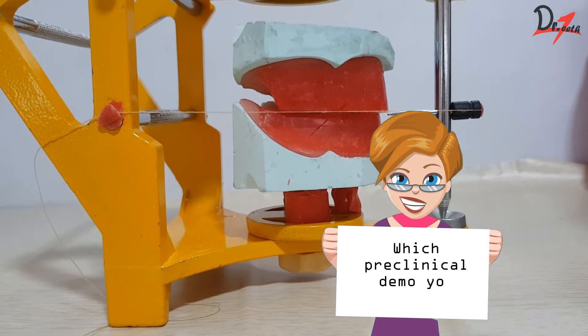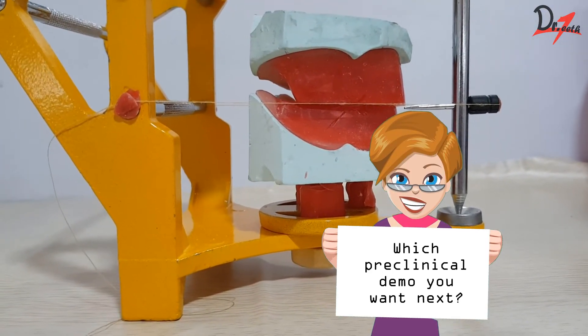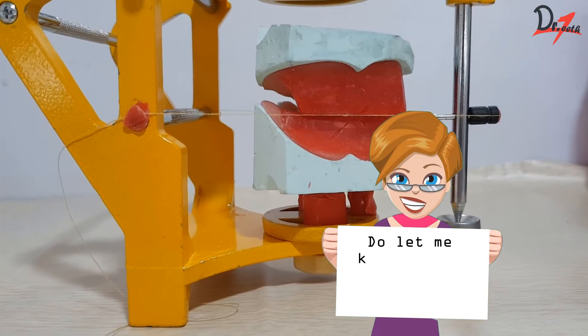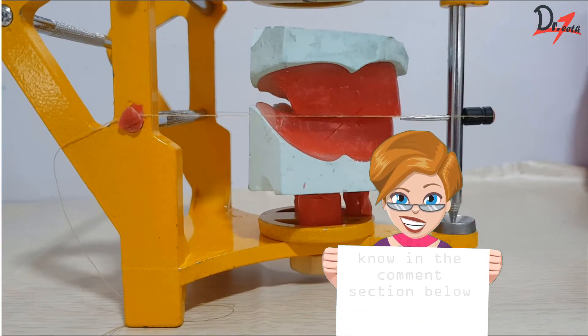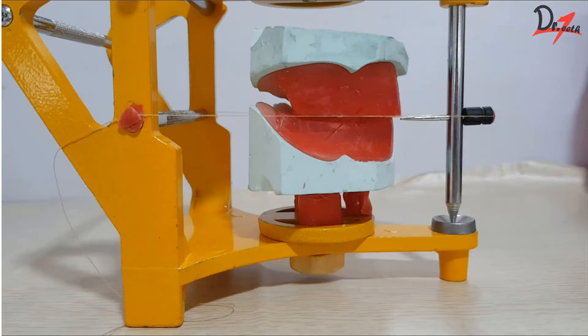Similarly, check from the right side and see the thread relation. Keep your eye at the level of the thread. Make sure that the thread on the left hand side and the right hand side should coincide as well as they should coincide with the plane of the occlusal rim also.